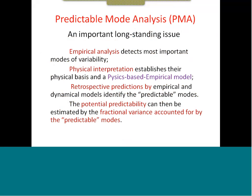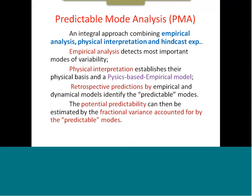What is PMA? It's an integral approach combining empirical analysis, physical interpretation, and hindcast experiments. The empirical analysis detects the most important modes of variability, physical interpretation establishes their physical basis and builds physics-based empirical models for prediction, and retrospective predictions by either empirical or dynamic models are used to identify whether those major modes of variability are predictable or not. Then the potential predictability can be estimated by those predictable modes.